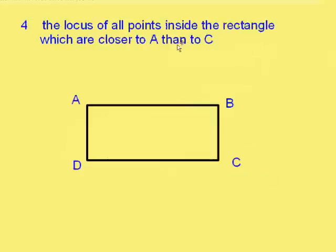Here's another one. The locus of all points inside the rectangle, which are closer to A here than they are to C here. Well, you should know the technique called drawing a perpendicular bisector, because that gives you a line which is exactly the same distance from two points. So let's draw a perpendicular bisector of the points A and C.